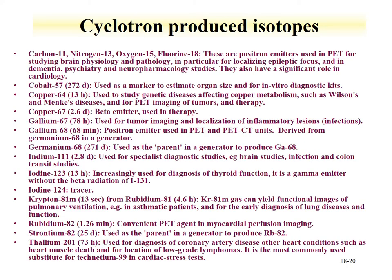A list of cyclotron-produced isotopes includes, in addition to fluorine-18, oxygen, nitrogen, and carbon isotopes used as positron emitters. Germanium-68 is used as a parent to generate gallium-68, which is a positron emitter. Krypton-81, produced from rubidium-81, can yield functional images of the lung. Thallium-201 can be used to diagnose coronary disease and is commonly used as a substitute for technetium in stress tests.